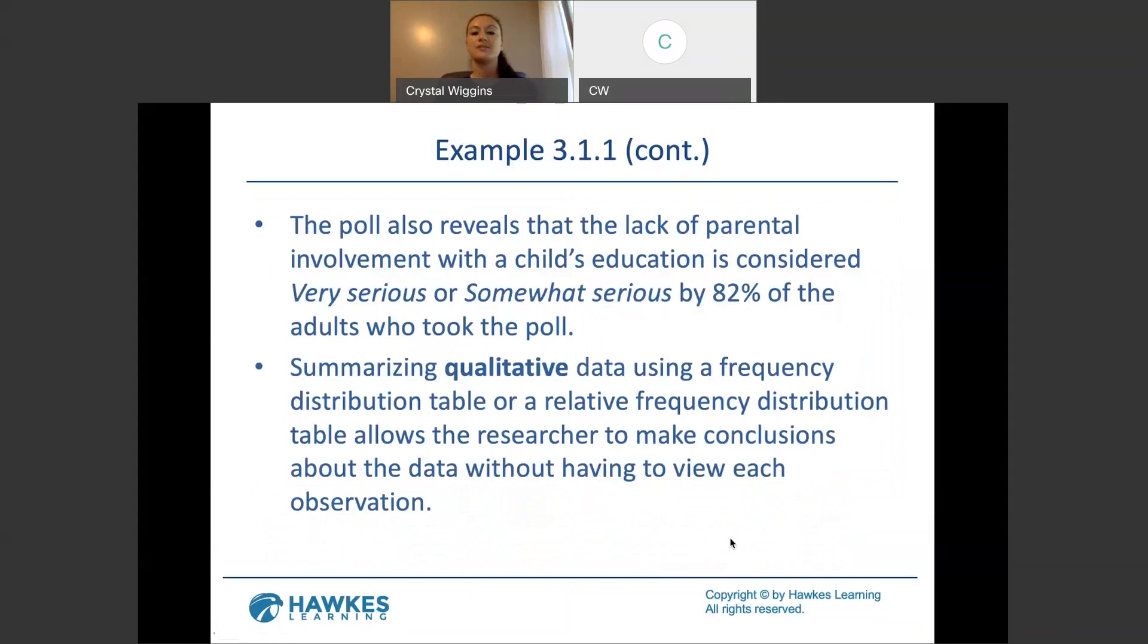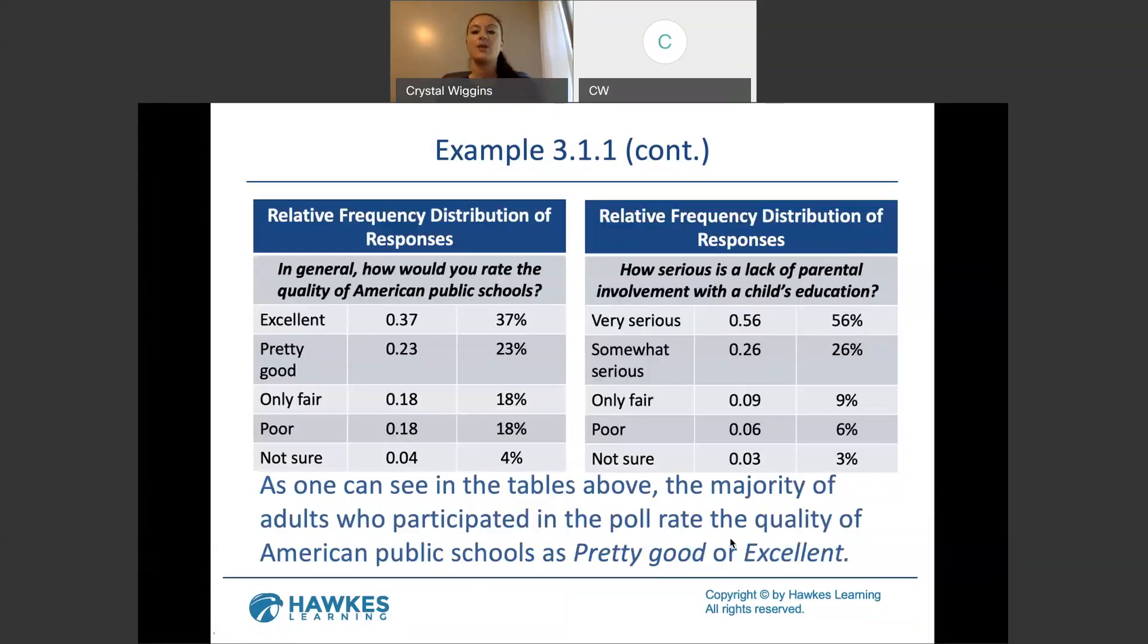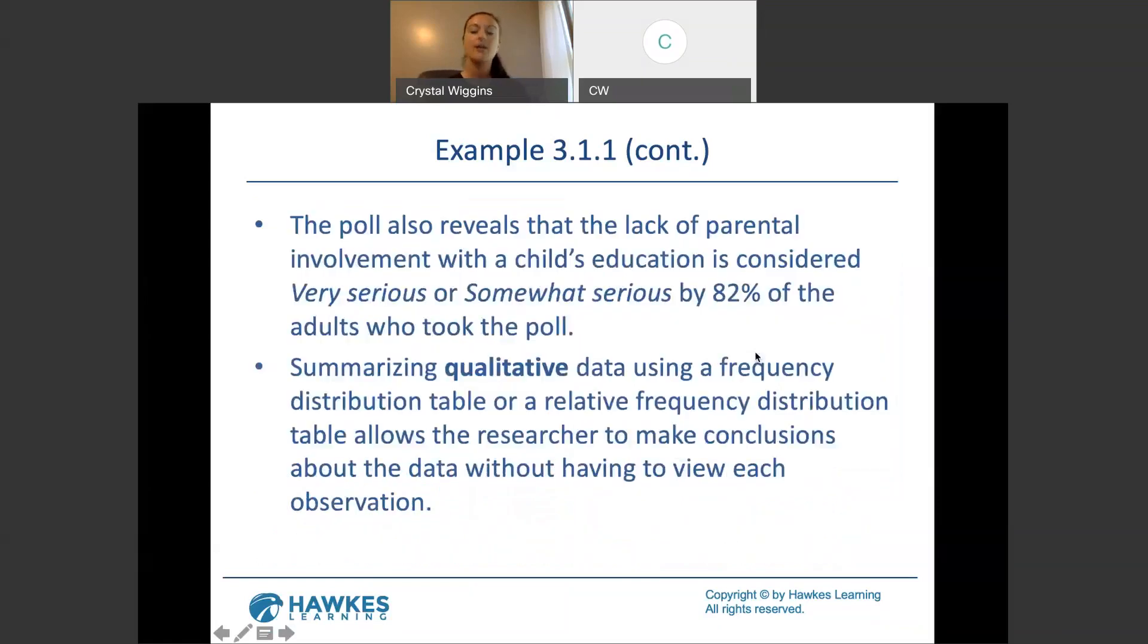Now, the poll also reveals that the lack of parental involvement with the child's education is considered very serious or somewhat serious by 82% of the adults who took a poll. Now, where did they get that statistic? Well, they took 56 and added it to 26 in order to get to the 82. So that's why they are talking about two different categories. We just add them together if we want the total percentage who responded with those categories. Summarizing qualitative data using a frequency distribution table or relative frequency distribution table allows the researcher to make conclusions about the data without having to view each observation.